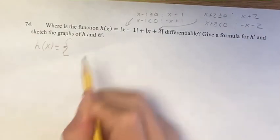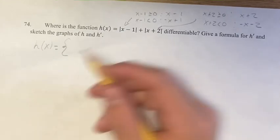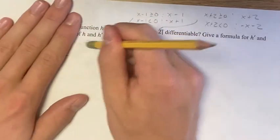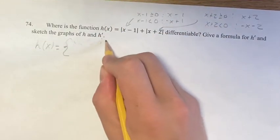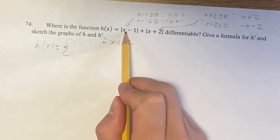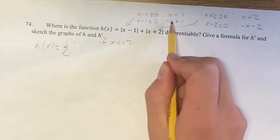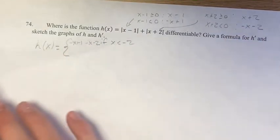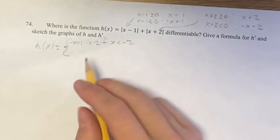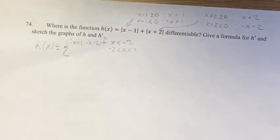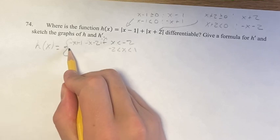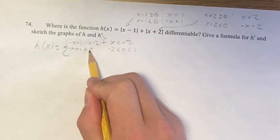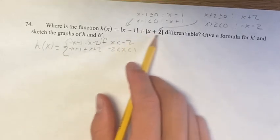Writing out our formula for h of x: when x is less than negative 2, both pieces will be negative, so we're going to have negative x plus 1 minus x minus 2. When x is between negative 2 and 1, we have negative x plus 1 — because this will still be negative since we're still less than 1 — plus x plus 2, since that part has ticked over to being positive.